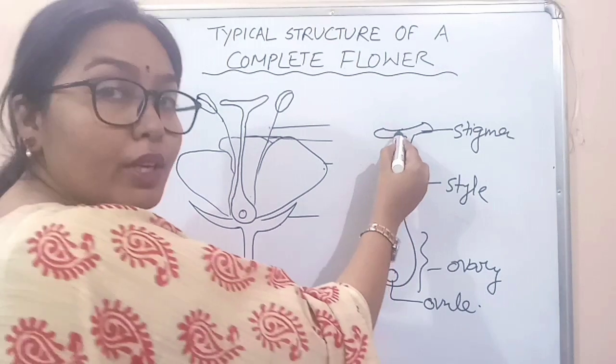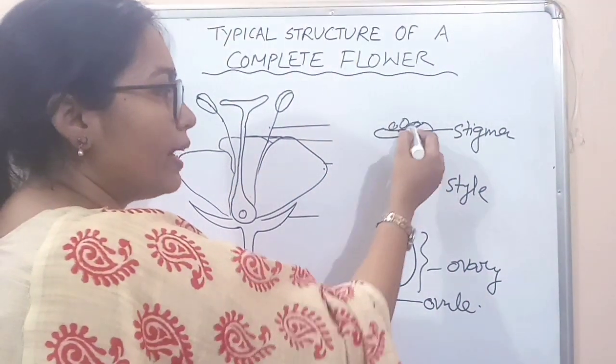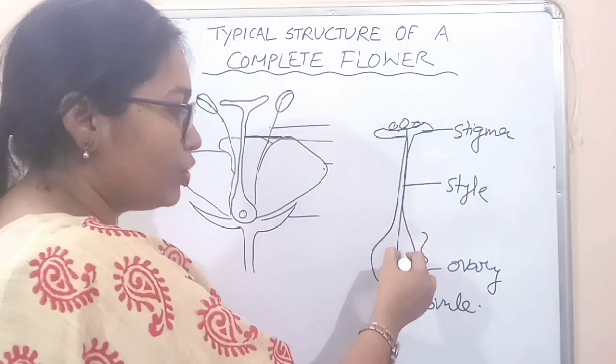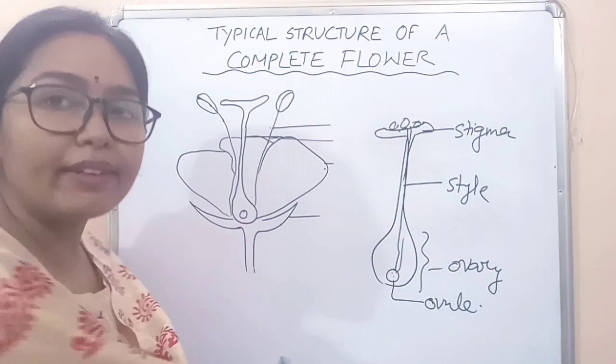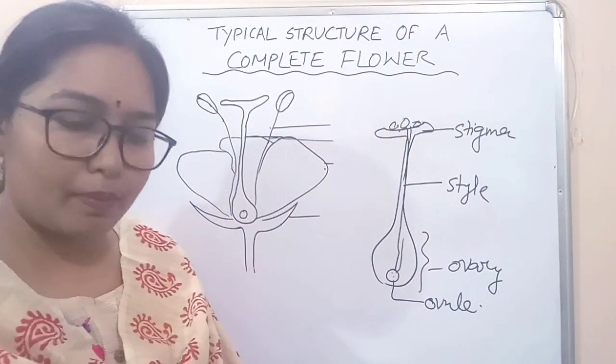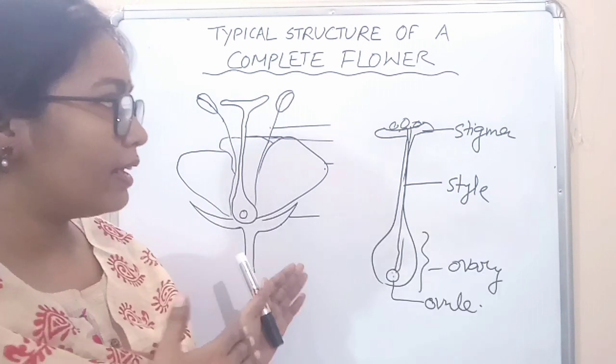Here the stigma is the receptor of pollen, the male part. Here pollen lands and they are driven onto the tube. With the tube they fertilize the ovule. So later we will discuss the process of reproduction clearly.